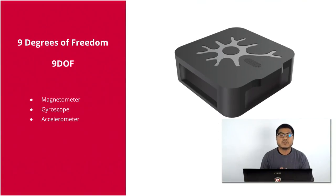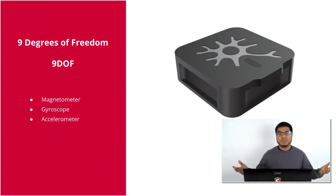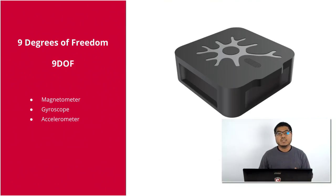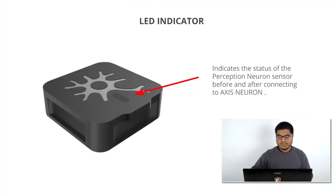Perception On sensors are nine degrees of freedom. They include magnetometer, gyroscope, and accelerometer. This is what makes up Perception On — it's an inertial-based motion capture suit. With this information, it is able to track motion.